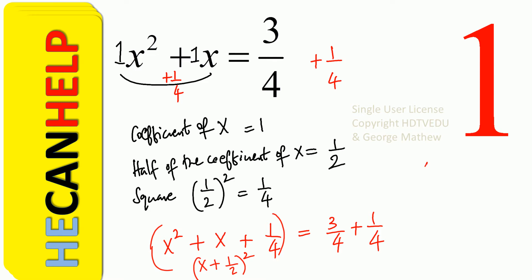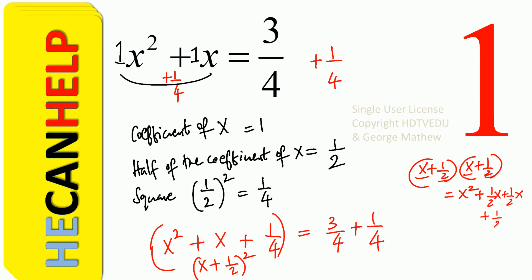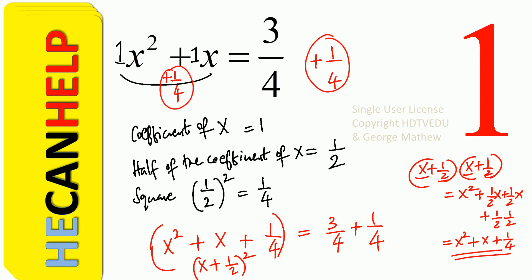So what is x plus 1 over 2 times x plus 1 over 2? First times first: x squared. Outer times outer: x times 1 half, so that is 1 half x. Inner times inner: plus 1 half x. Last times last: 1 half times 1 half. That is x squared, and half x plus half x is 1x, and 1 over 2 times 1 over 2 is 1 over 4. So we are actually adding 1 over 4 to both sides.